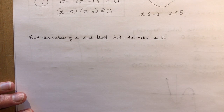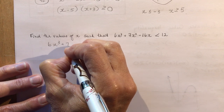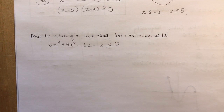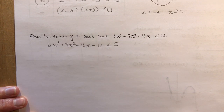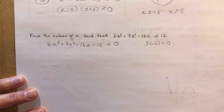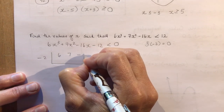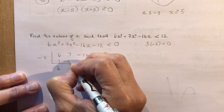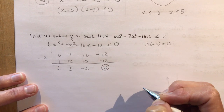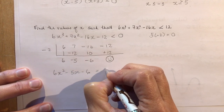For the last question, find the values of x such that the cubic expression is less than 12. Rewriting with everything on one side gives 6x³ + 7x² − 16x − 12 < 0. I need to find a root using the Factor Theorem. Testing f(−2) = 0, so x + 2 is a factor.